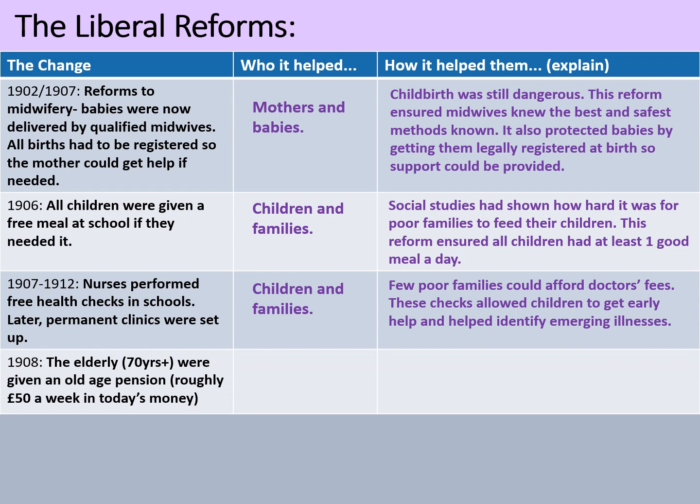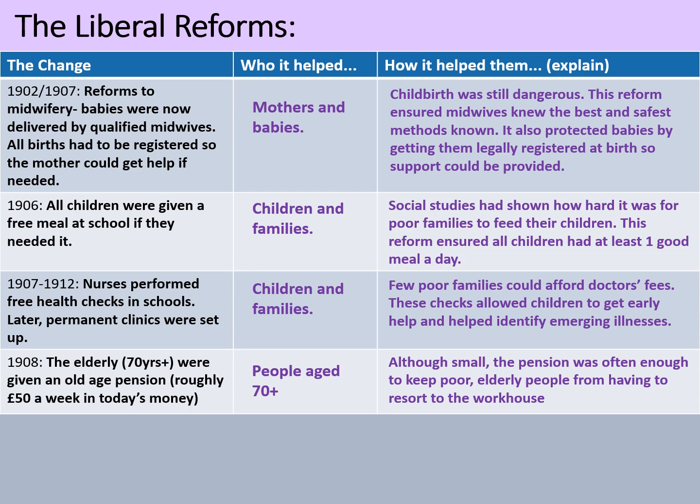In 1908, old age pensions were introduced — this is a really big one. The elderly, which under the law meant anyone over the age of 70, were given an old age pension roughly equivalent to £50 a week in today's money. It doesn't sound like a lot, but the idea was that someone wasn't meant to live off that alone. It was meant to top up their earnings and keep them out of the workhouse. The pension was often enough to keep poor elderly people from having to resort to the workhouse because they'd be able to use it to supplement their own income or savings.